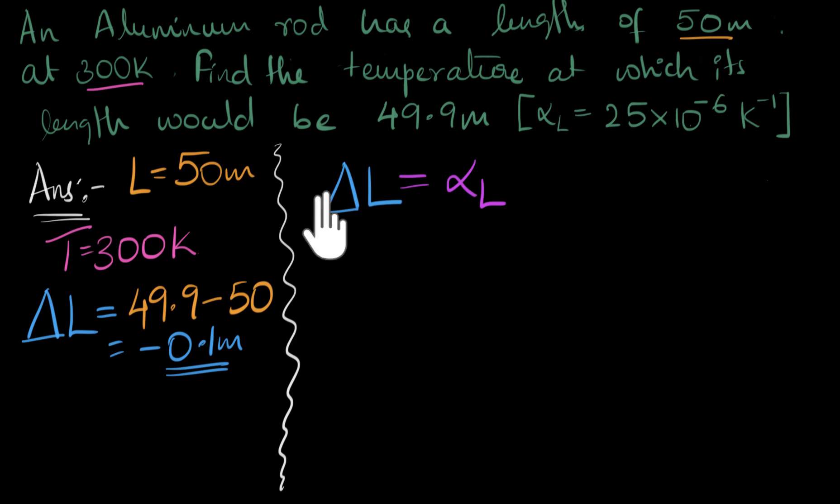Similarly, if we had three meters, the total expansion would be thrice. If we have L meters, let's do it in general first. If we have L meters, then the total expansion would be alpha L times L. Times L. Oh, that makes sense, right?